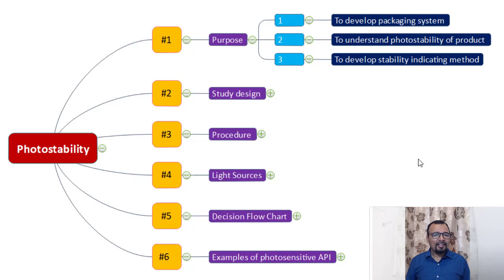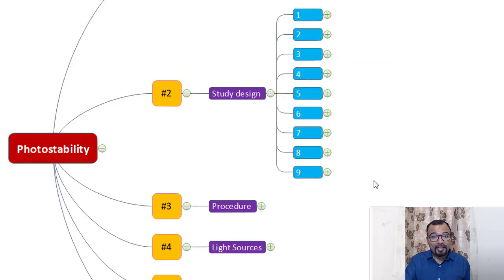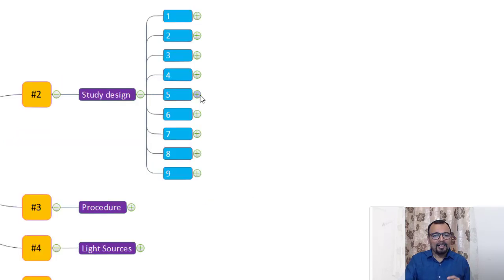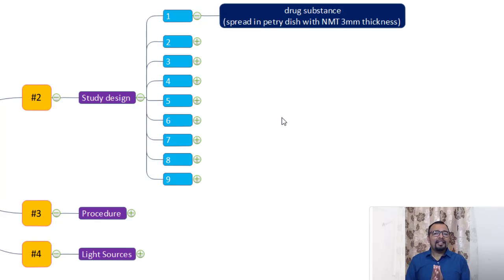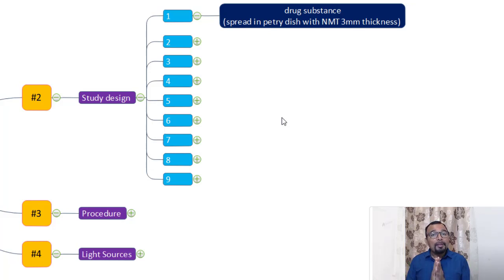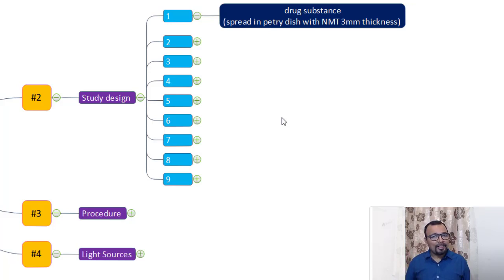The second point is the study design, which is a very important aspect of photostability. There are nine points. Point number one: in case of only API, you need not worry about the drug products. But in case of drug products, you can begin the study by starting exposure of the APIs to the conditions discussed in point number three.